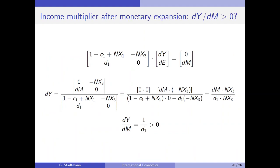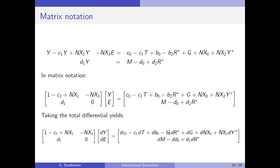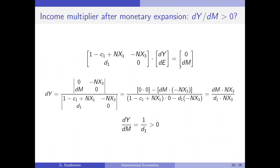We want to compute the income multiplier after an expansionary monetary policy. From the graph, we know dY/dM should be positive because when the central bank increases money supply, GDP increased from Y_A to Y_B. Only money supply increases; all other variables are constant so their changes equal zero — only dM is nonzero. In case we want to compute effects on GDP, GDP is located in the first position of the vector of unknowns.